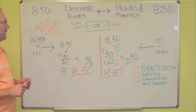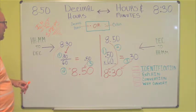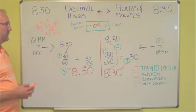.50 is 1 half of 1 hour. So, 8.50 is 8 and 1 half hours. 8.50 is exactly the same as 8 hours and 30 minutes.